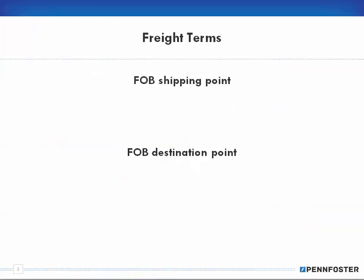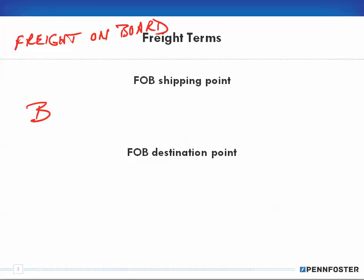Now let's talk about freight terms. There are two types: FOB Shipping Point and FOB Destination Point. FOB stands for Freight On Board. I'll draw this out: here's the seller on one side, and the buyer on the other. Using our ice cream machine example at $10,000, let's say there's a 20% discount.